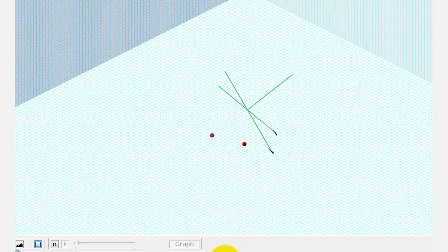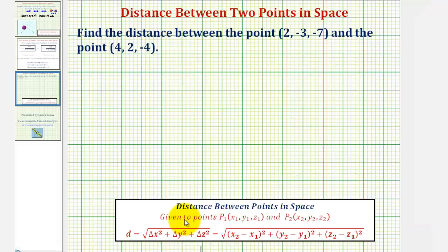To do this, we'll use the distance formula, which is given here below, for the distance between two points in space. This is just an extension of the distance formula in two dimensions. In three dimensions, we have the distance equals the square root of the change of x squared plus the change of y squared